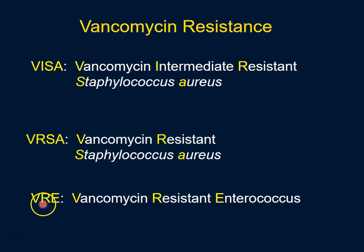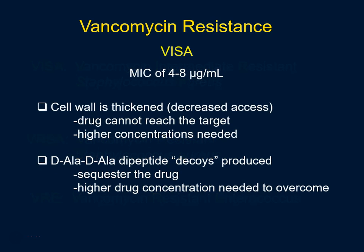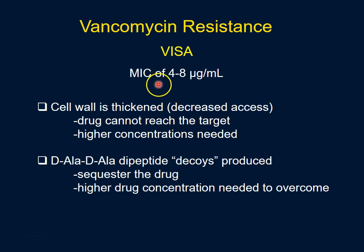Mechanistically, VRSA and VRE are very similar if not identical. For VISA, the MIC required to inhibit the staphylococcal bacteria rises to 4–8 micrograms per mL, higher than normal. The mechanism is that these bacteria thicken their cell wall, which restricts vancomycin's access to the pentapeptide targets within the cell wall being constructed, requiring higher drug concentrations.